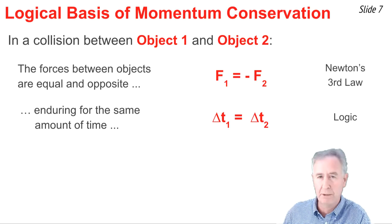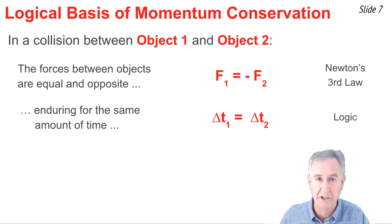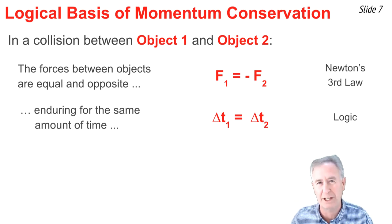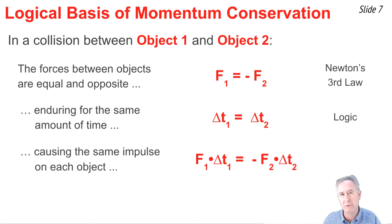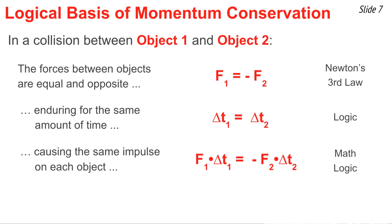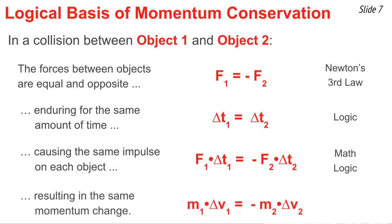From math logic, since we have two equations — A equals B and C equals D — math logic tells us A times C equals B times D. This leads to the statement: F1 times delta T1 equals negative F2 times delta T2. In other words, the impulse on object one equals the impulse on object two. From physics logic, because impulse equals momentum change, if the impulses are equal and opposite, the momentum changes of the two objects are equal and opposite. On the left, the momentum change of object one is M1 times delta V1; on the right, it's M2 times delta V2. These are equal momentum changes but in opposite directions — one gains and the other loses.